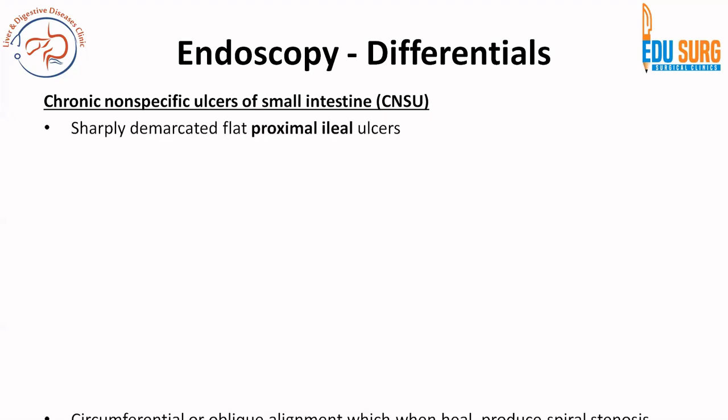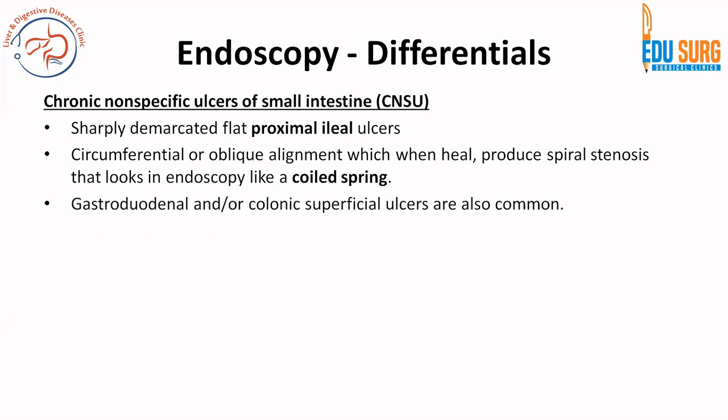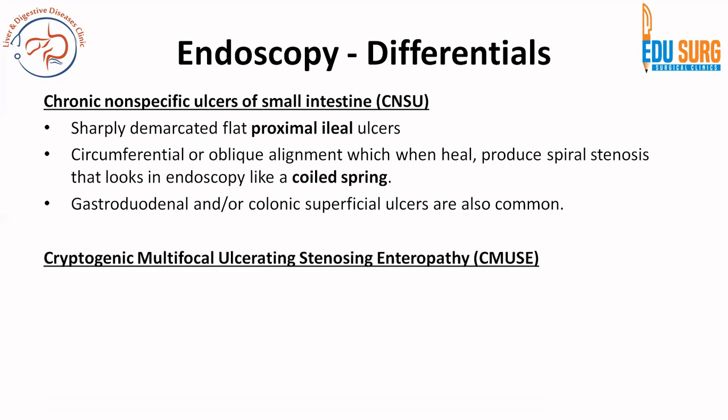In CNSU (chronic non-specific small bowel ulceration), there are sharply demarcated proximal ileal ulcers with an appearance like a coiled spring, because the oblique alignment of the ulcers produces spiral stenosis which looks like a coiled spring on endoscopy. Gastroduodenal or colonic superficial ulcers are also common. CNSU is more common in young females and presents usually with anemia and growth retardation.